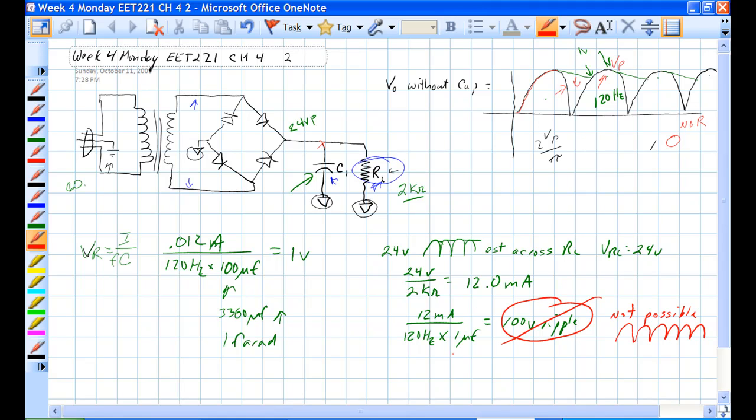If you make this 10 microfarad, you get a 10 volt ripple. We should make it 3300 microfarad. Let's work this one out.